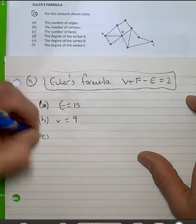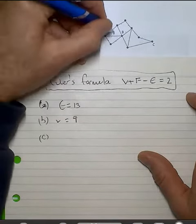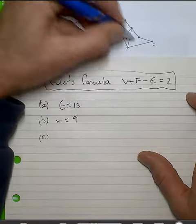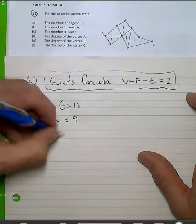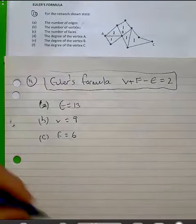Now when we count the faces: 2, 3, 4, 5, but the whole shape represents a face as well. The faces here are equal to 6.